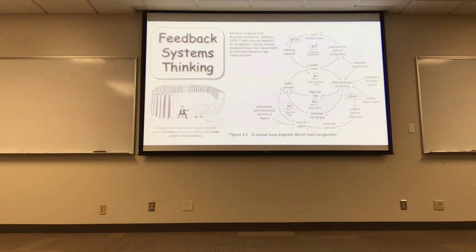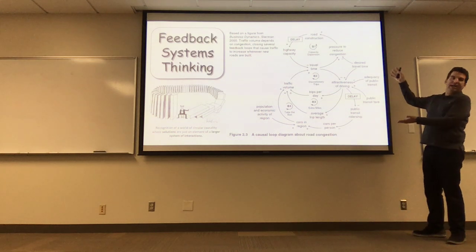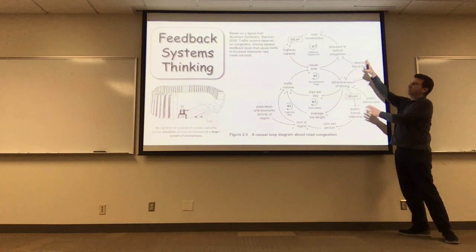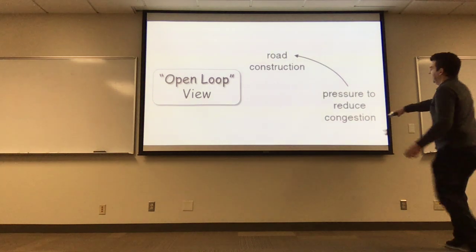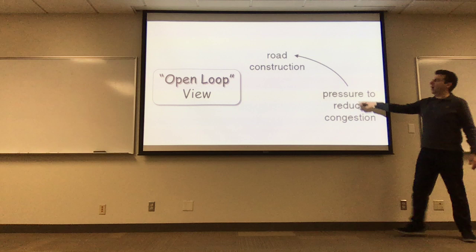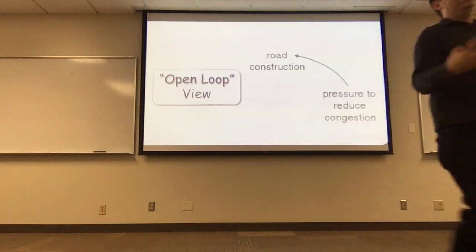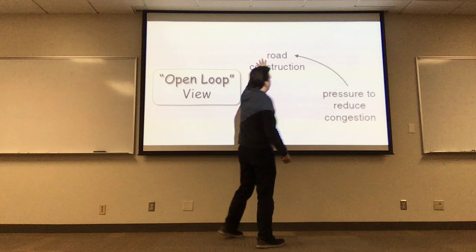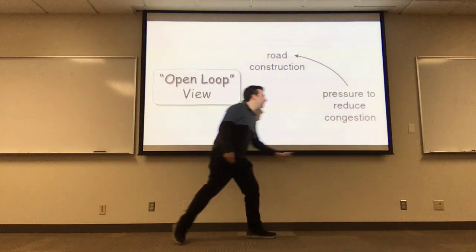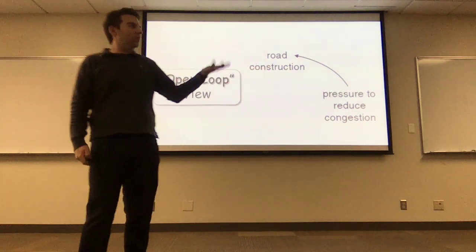Their example was this congestion example — modeling the roadways in London, but it could be about anywhere. Most people don't think about this system; they think more locally. They say there is a pressure to reduce congestion, so why don't we build more roads? It seems like certain highways are always under construction. There's a road construction effect that may someday then feed back on this pressure to reduce congestion. So simply building more roads might only be a short-term fix.